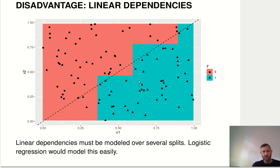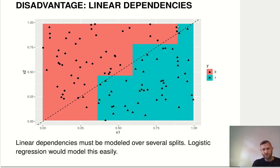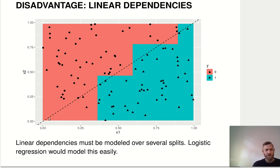You can see that already this is a fairly complicated tree with probably nine or ten nodes to get this kind of staircase shape, and it still doesn't approximate the true decision boundary very well. We would need a tree with a lot of nodes to get a step function fairly close to that diagonal line. With logistic regression, we could model this very, very easily.